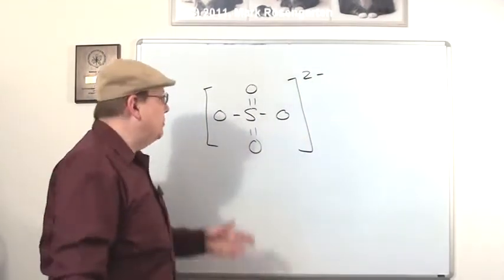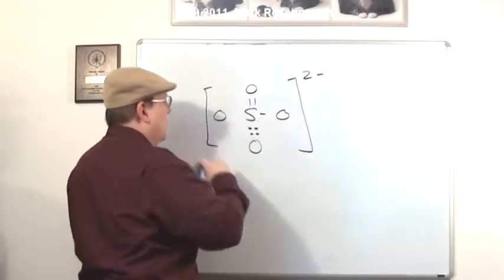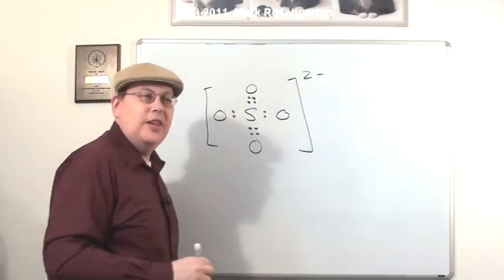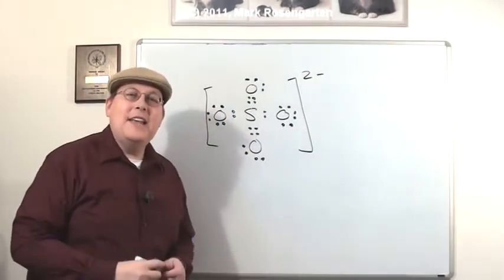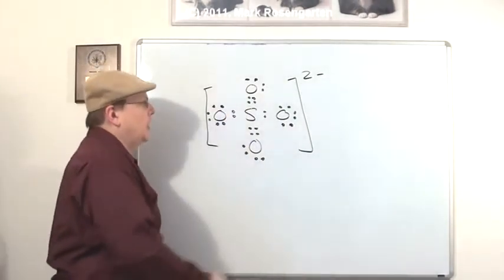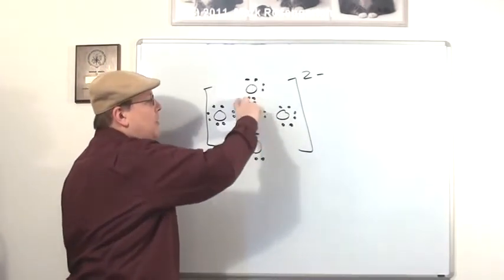Now if you follow the normal rules and replace each of your dashes with two dots, and then fill in your stable octets for the oxygen, you have the dot diagram of the sulfate ion. Now you have some resonance going on where this double bond switches back and forth between these two pairs of oxygens.